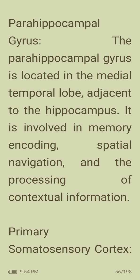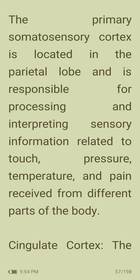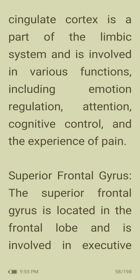Parahippocampal gyrus: located in the medial temporal lobe adjacent to the hippocampus, involved in memory encoding, spatial navigation, and the processing of contextual information. Primary somatosensory cortex: located in the parietal lobe, responsible for processing and interpreting sensory information related to touch, pressure, temperature, and pain received from different parts of the body. Cingulate cortex: part of the limbic system, involved in various functions including emotion regulation, attention, cognitive control, and the experience of pain.